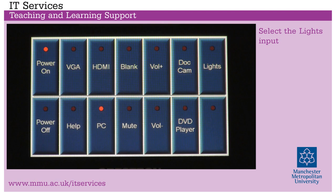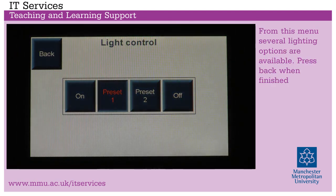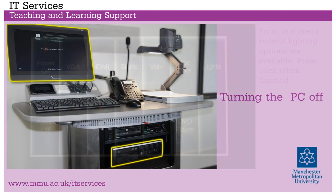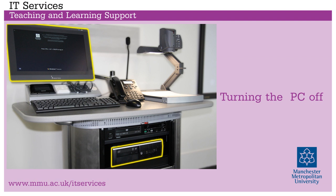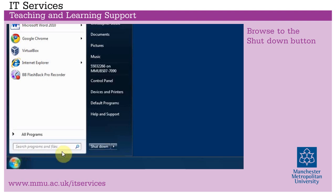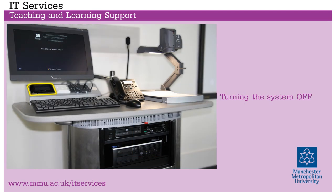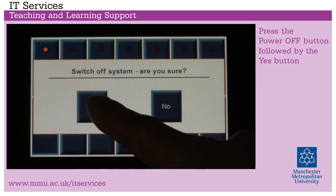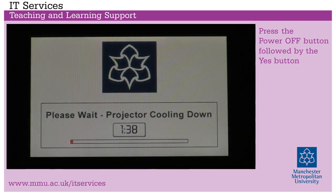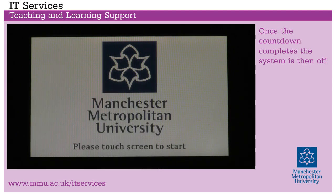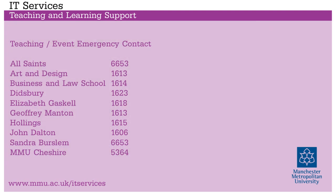Lighting control. Select the Lights input. From this menu, several lighting options are available. Press back when finished. Turning the PC off. Browse to the shutdown button. Turning the system off. Press the power off button followed by the yes button. Once the countdown completes, the system is then off.